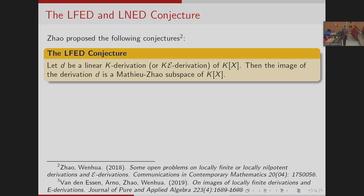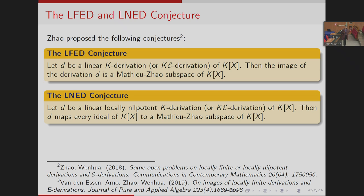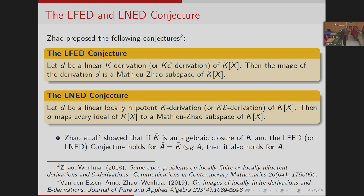I will now talk about two conjectures proposed by Zhao in 2018. The first is the LFED conjecture: if D is a linear k-derivation of k[x], then the image of D is a Mathieu-Zhao subspace of k[x]. The second conjecture states: if D is a linear locally nilpotent k-derivation of k[x], then D maps every ideal of k[x] to a Mathieu-Zhao subspace of k[x]. Additionally, Zhao et al. showed that if k-bar is the algebraic closure of k and the LFED conjecture holds for A-bar, then it also holds for A, so we can always work over an algebraically closed field.